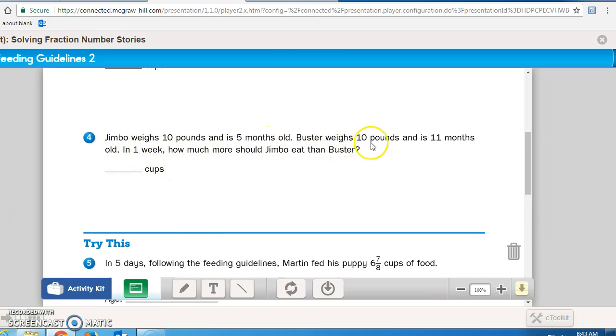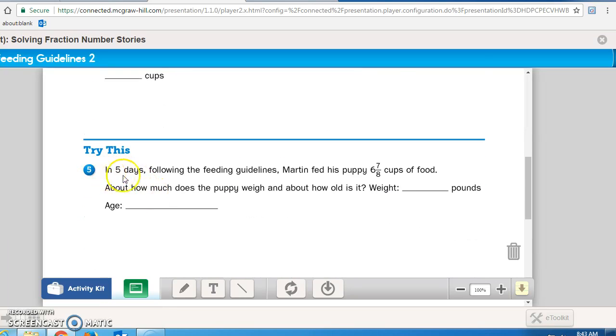Number 4 says Jimbo weighs 10 pounds and is 5 months old. Buster weighs 10 pounds and is 11 months old. In one week, how much more should Jimbo eat than Buster? So you've got a couple things you got to work out there before you can come up with your answer.